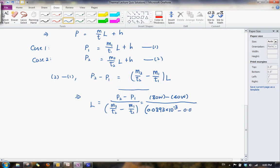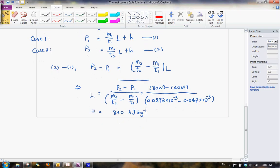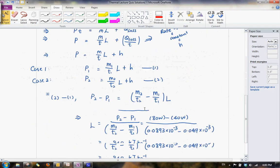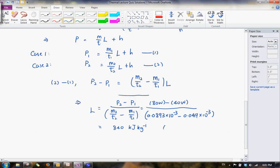And punching it into the calculator. And converting, you will have 840 kilojoules per kg. And 840 joules per kg is option A. And that's it.